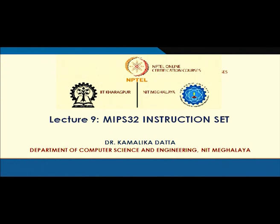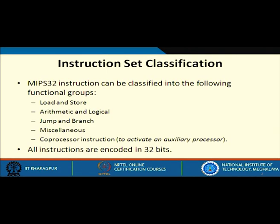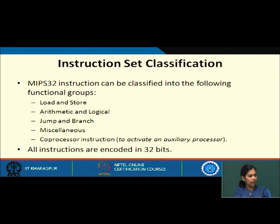Welcome to the 9th lecture on MIPS 32 instruction set. In this lecture we will be seeing the various kinds of instructions that are possible in MIPS 32. Broadly, instructions in MIPS can be classified into load-store instructions, arithmetic and logic instructions, jump and branch, miscellaneous instructions, and coprocessor instructions. All instructions can be encoded in 32 bits.